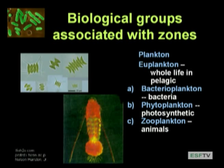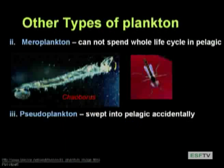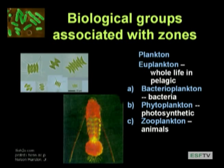In addition, larval fish can be zooplankton if they don't swim very well. For some period of their life they may be buffeted about, wandering without control. They can swim and move up and down, but they can't resist a strong current.